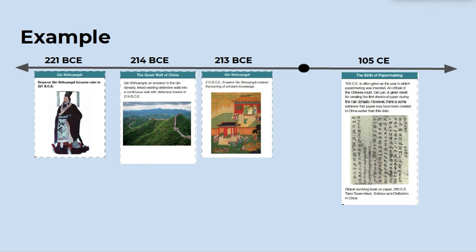You will have the opportunity to organize events in history within a timeline. Keep in mind the dates from before the common era and during the common era. For example, your timeline event cards can tell you that Emperor Xing Xiewandi became emperor in 221 BCE. He linked defensive walls, which became the Great Wall of China, in 214 BCE, then ordered the burning of scholarly knowledge in 213 BCE. We can also note that in 105 CE, papermaking was invented, although some think there is evidence that paper had been invented before this.